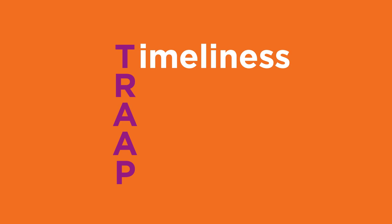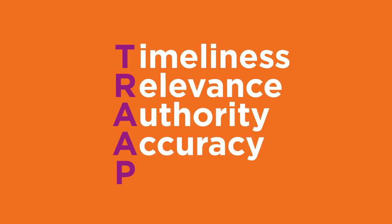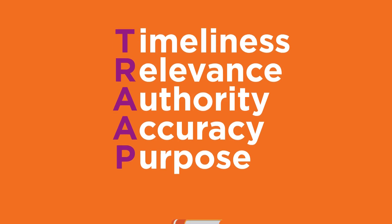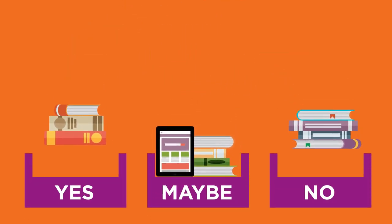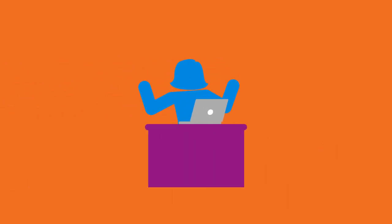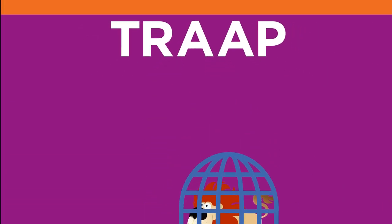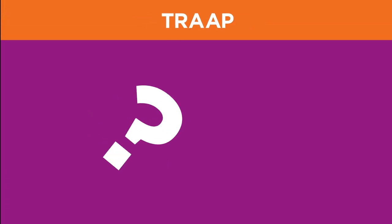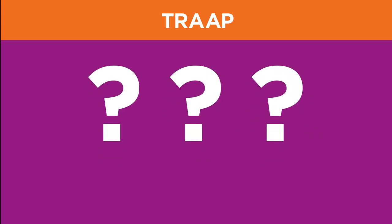After testing for Timeliness, Relevance, Authority, Accuracy, and Purpose, your pile of potential sources may be much smaller — and that's a good thing. You've determined that the remaining sources should be useful for your project. Now let's TRAP a source together. First, review your research questions.